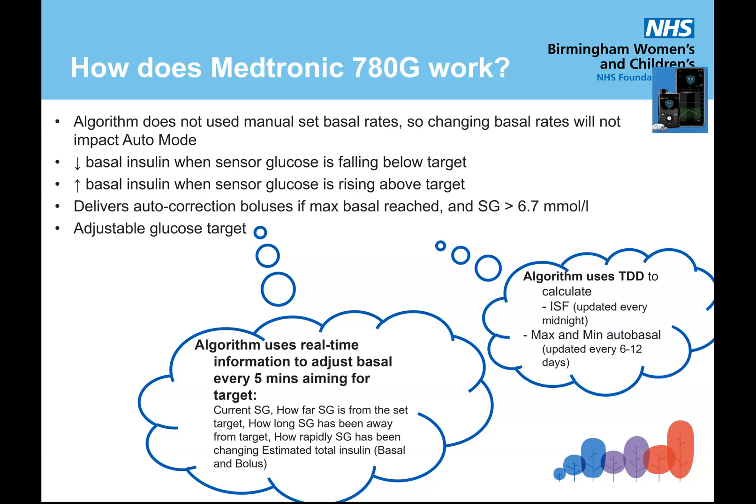The algorithm uses the total daily dose to calculate the sensitivity, and it's updated every night. It looks at the maximum and minimum auto basal, derived from the last 6 to 12 days worth of insulin. So the last 6 to 12 days worth of insulin will determine basically how high or how low the insulin can be adjusted by.